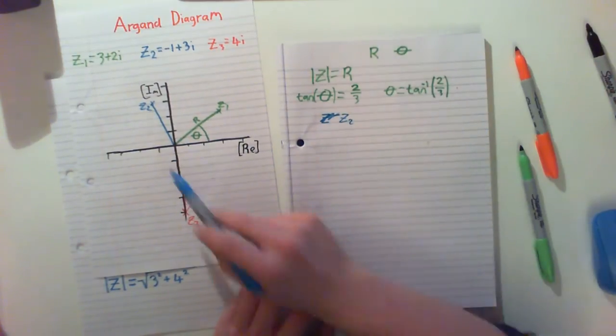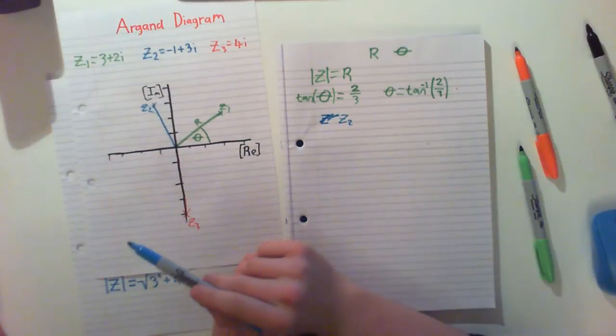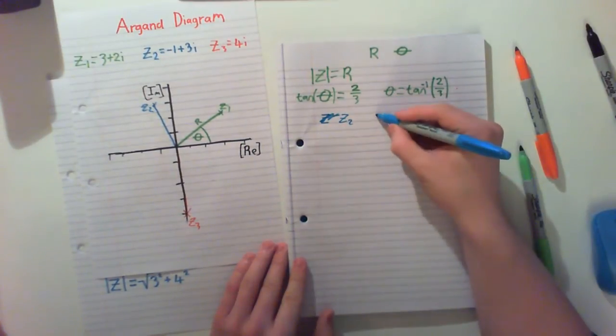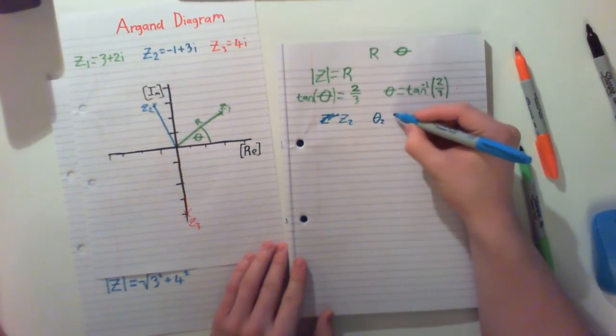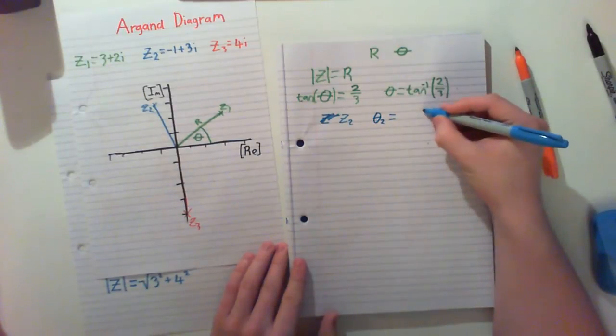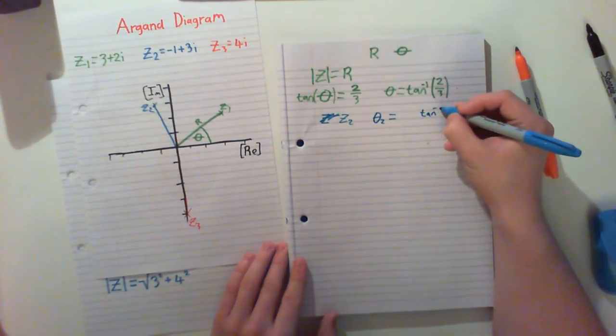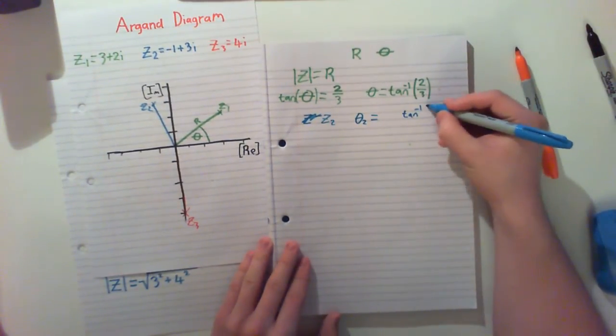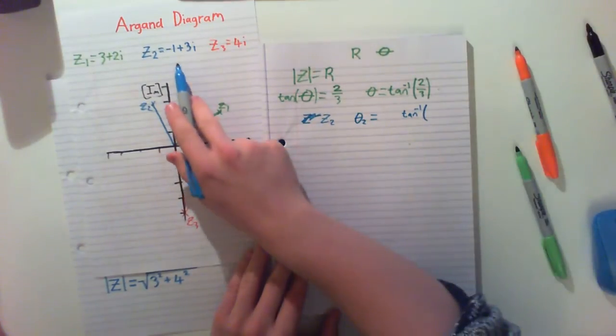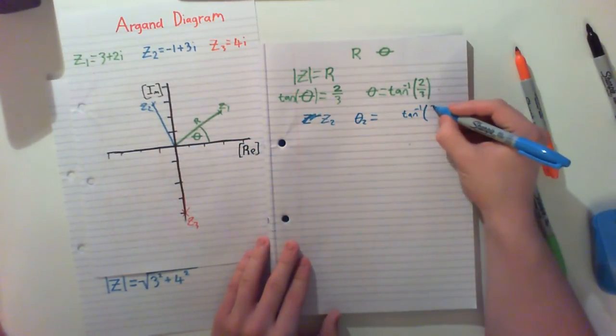we can now look and say we can use the same thing for tan minus 1. So theta 2 equals tan minus 1. And we have, we'll just take the magnitude of each of these. So we have 3 over 1.